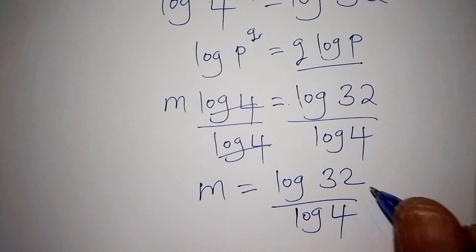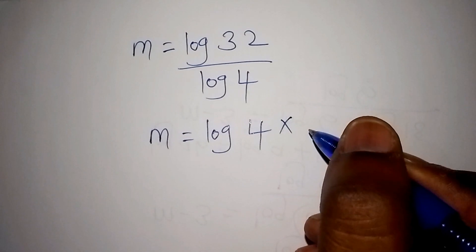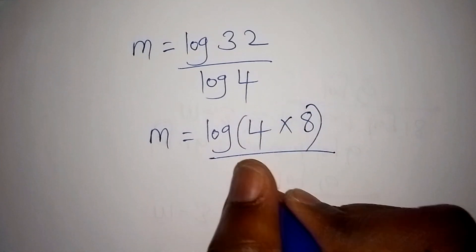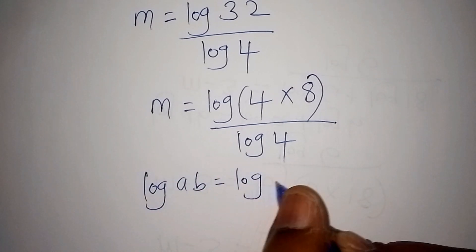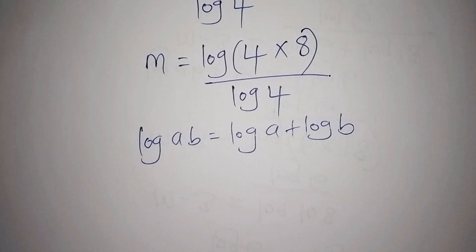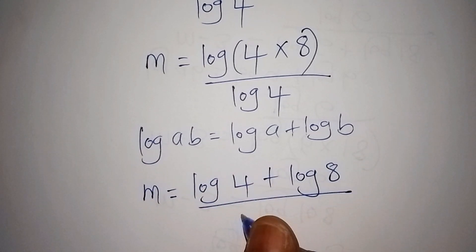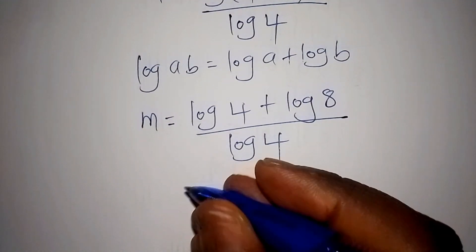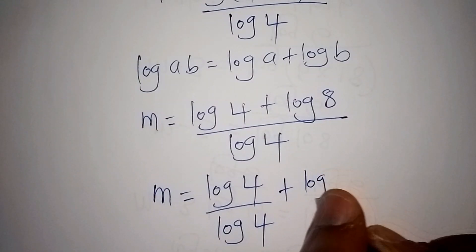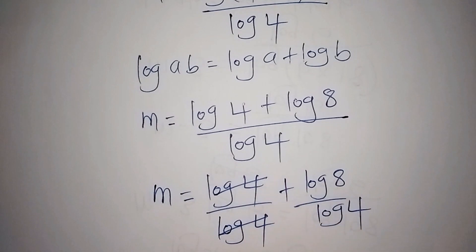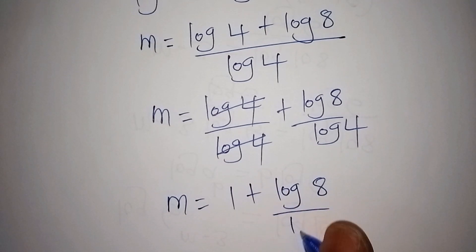We can still factorize this further. Since 32 equals 4 times 8, we write m equals log of 4 times 8, all over log of 4. Using the rule log(ab) = log a + log b, we get m equals log 4 plus log 8, all over log 4. Splitting the fraction: m equals log 4 over log 4 plus log 8 over log 4, which simplifies to 1 plus log 8 over log 4.